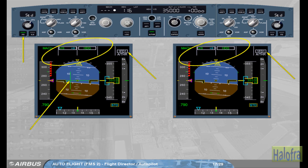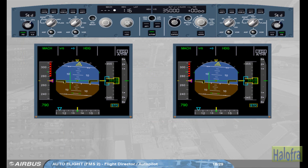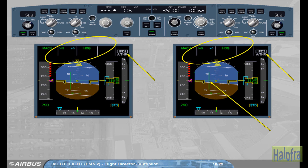Let us now turn the first officer's flight director back on. Note: when both autopilots and FDs are off and you turn one of them back on again, it comes up in basic modes — vertical speed and heading, or flight path angle and track. Both FDs are now on. The crossbars are displayed on PFD 2. Both FMAs indicate flight director 2 as engagement status, meaning that both FDs are on, with the on-side flight director guidance modes.